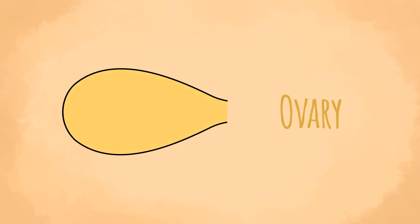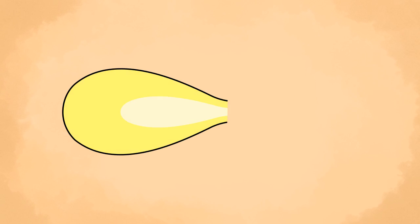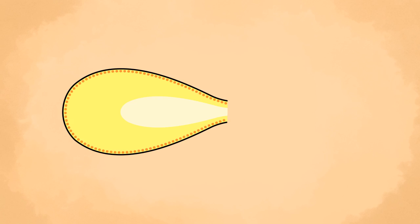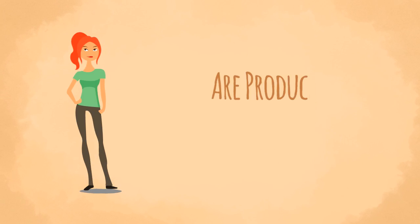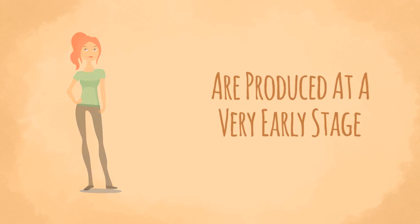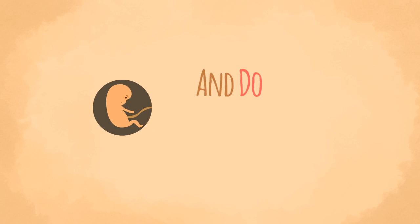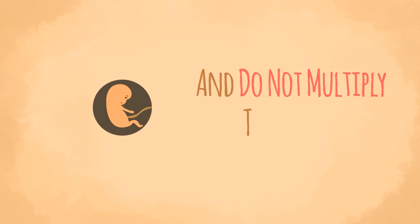The female gonad is the ovary. It has an outer part called the cortex and an inner part, the medulla. The cortex contains many large round cells called oogonia. All the oogonia to be used throughout the fertile life of a woman are produced at a very early stage, possibly before birth, and do not multiply thereafter.